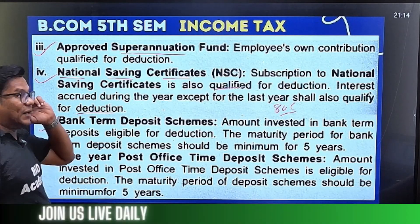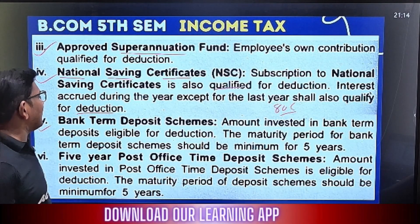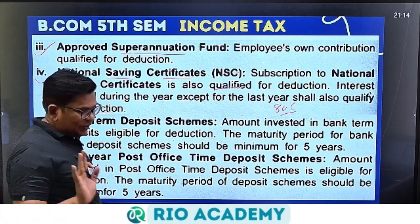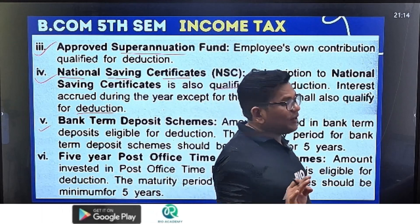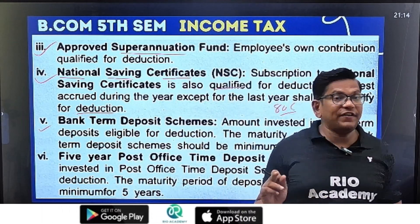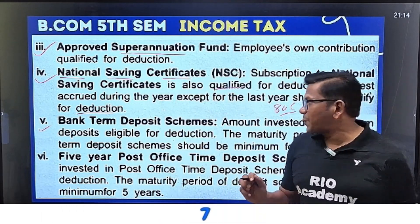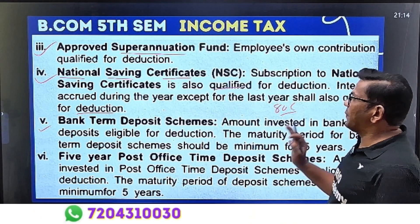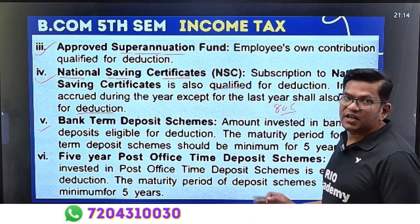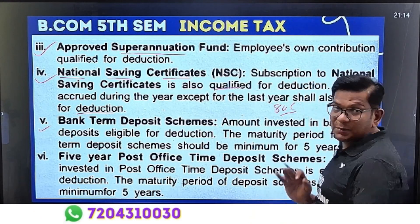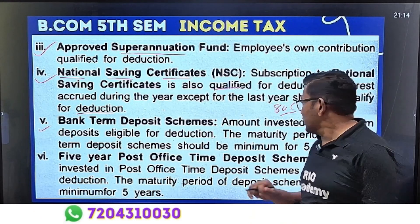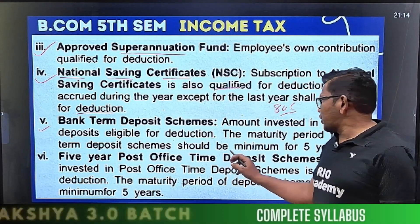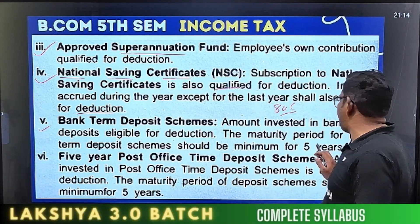Fifth point: Bank Term Deposit — also known as Fixed Deposit (FD). An amount invested in a bank term deposit qualifies for deduction. The maximum is 1.5 lakh. The maturity period for the bank term deposit should be a minimum of five years.